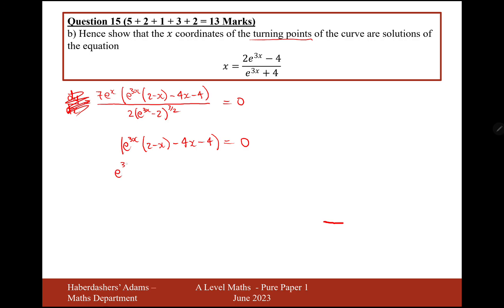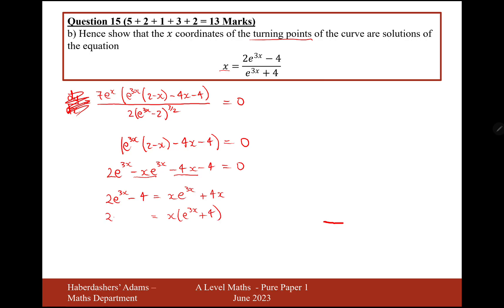Expanding the brackets: 2e to the 3x minus xe to the 3x minus 4x minus 4 equals 0. We need to factorise out x, so moving terms: 2e to the 3x minus 4 equals xe to the 3x plus 4x. Factorising the right-hand side gives e to the 3x plus 4. Then dividing by the brackets: x equals 2e to the 3x minus 4 over e to the 3x plus 4. And there we are — that's the answer to part B.